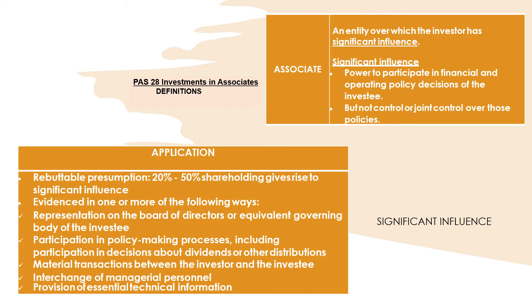Let's define our terms. An associate is an entity over which the investor has significant influence. Significant influence is the power to participate in financial and operating policy decisions of the investee. The investor has voting power, but does not control or have joint control over those policies. So the investor can vote, but has no control over the operating policies.